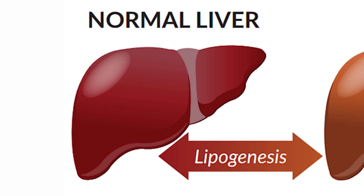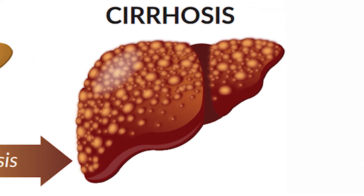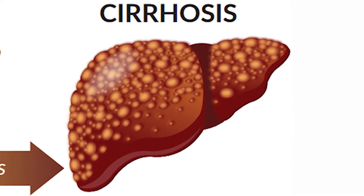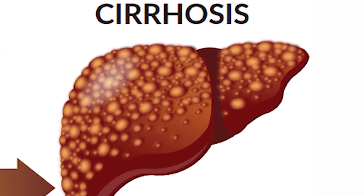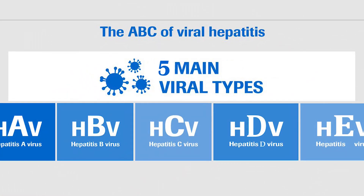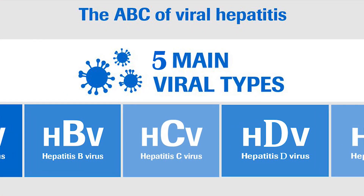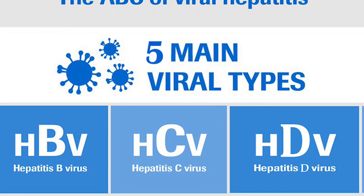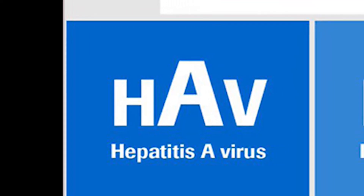The condition can be self-limiting or can progress to fibrosis, which refers to scarring of the liver, or cirrhosis. These are risk factors for liver cancer. There are five types of viral hepatitis caused by different viruses: hepatitis A, B, C, D, and E.